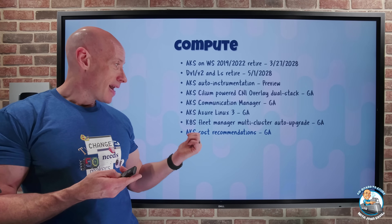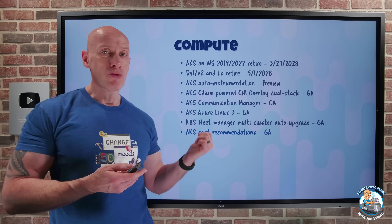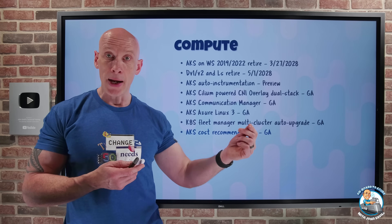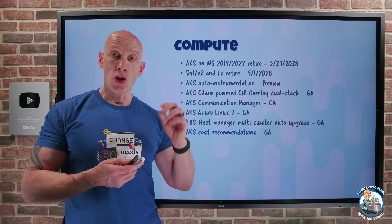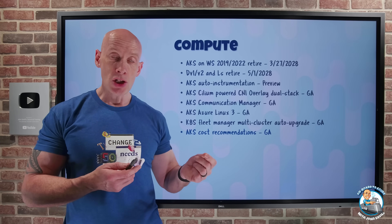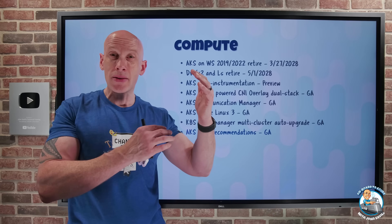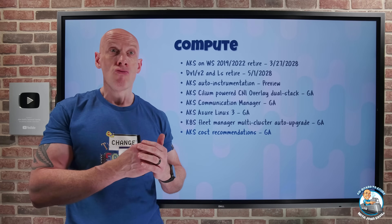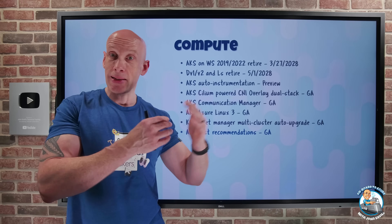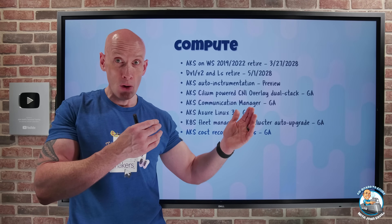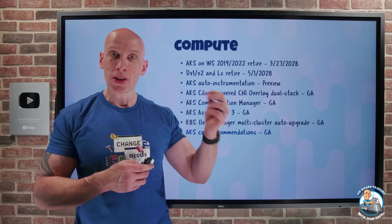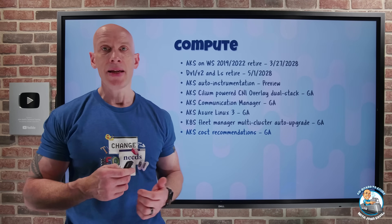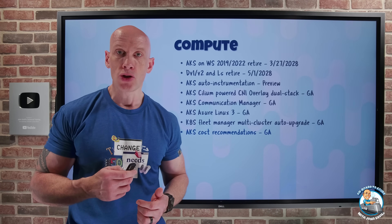AKS now has cost recommendations in GA via Azure Advisor. It can help you right-size the SKUs you're using for nodes, right-size the clusters themselves and node pools, pick a different SKU selection, adjust auto-scale settings, and a whole bunch more.